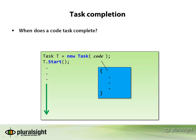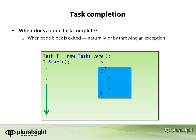What about task completion? Now that we have our tasks executing, it's worth talking about when a task actually completes. Given a code task where we provide the code stream for execution, the idea is pretty simple: when the code block is exited, either naturally or by throwing an exception, the task has completed.